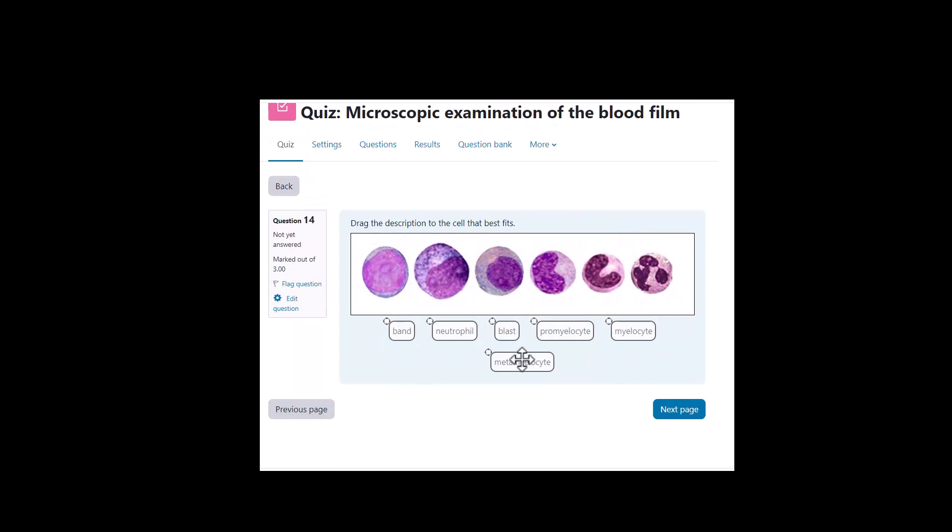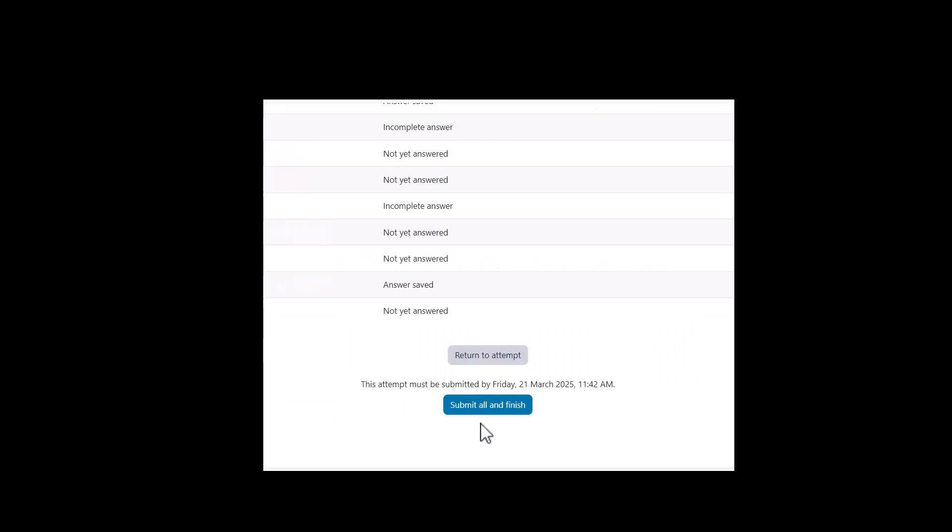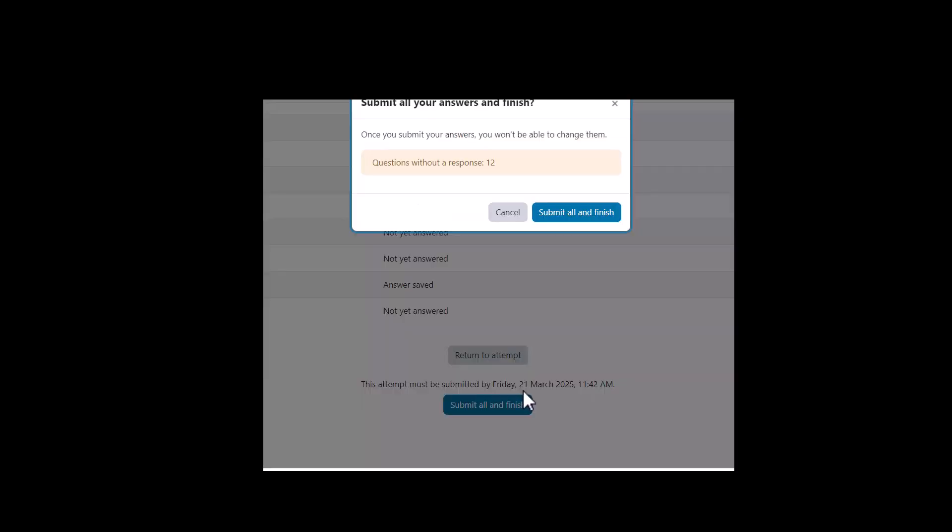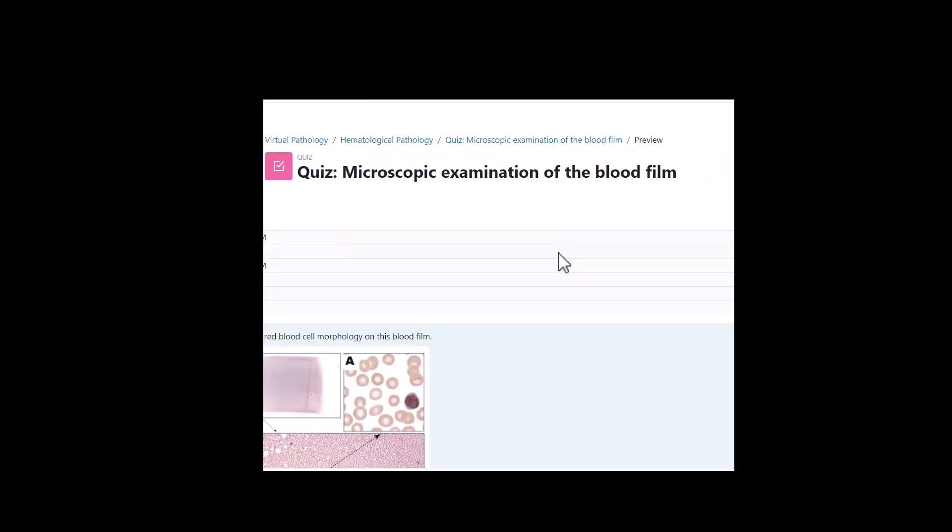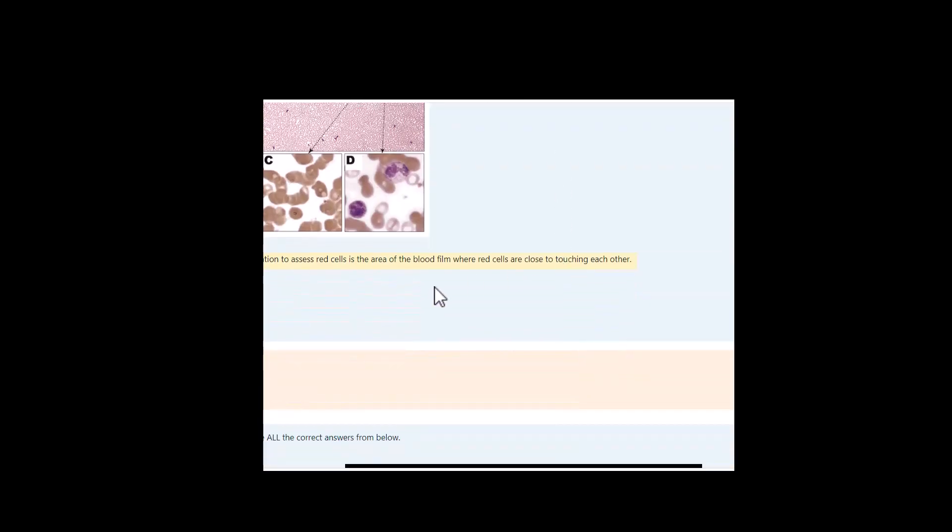This is just an example of immature and mature myeloids. And you drag the answers to where the appropriate cells are. This is a good example of a blast here. And when you're all done you just submit all your answers and you get immediate feedback with the right answers and whether you were correct or incorrect.